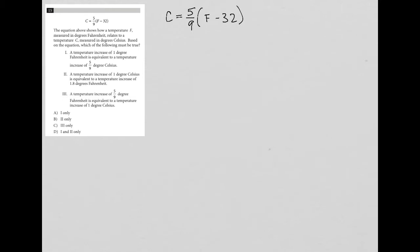Let's see. How do I test that? I can use kind of a plug in your own number method here, in which case a temperature increase of one degree Fahrenheit. Let's say originally my Fahrenheit was, and let's make this so I don't have a negative number in here. Let's say my Fahrenheit degree measurement was 33.